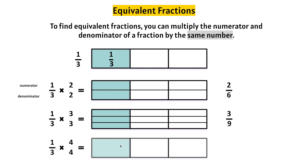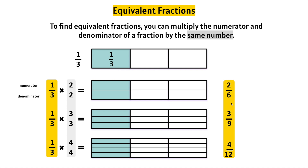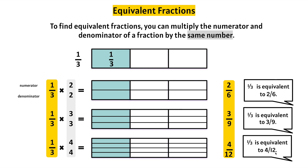One-third times four. Let's make a third and four times as many. We have four shaded. Four plus four plus four is twelve, so four-twelfths. One times four is four and three times four is twelve. So if we multiply one-third by the same number on the top and the bottom, we can find equivalent fractions. One-third is equivalent to two-sixths, three-ninths, and four-twelfths.